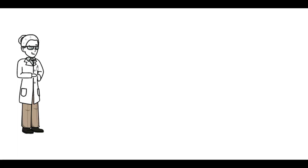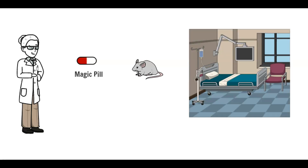Let's assume you own a pharmaceutical company. Now imagine you have a new potential drug called magic pill. Magic pill has gone through all pre-clinical stages, including animal testing. Now we are ready for the clinical development stage, meaning it is ready to be tested in human subjects.